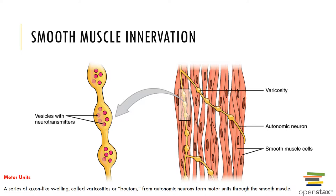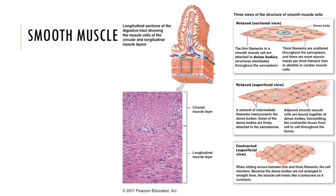Furthermore, there are no T-tubules, and the sarcoplasmic reticulum forms a loose network throughout the sarcoplasm. Visceral smooth muscle cells have no direct contact with motor neurons but are connected to each other via gap junctions. Whenever a contraction is stimulated, its electrical signal can spread from cell to cell. Pacesetter cells are present in areas where peristalsis, or rhythmic contraction, is necessary. Here you can see the different views of the smooth muscle cells.